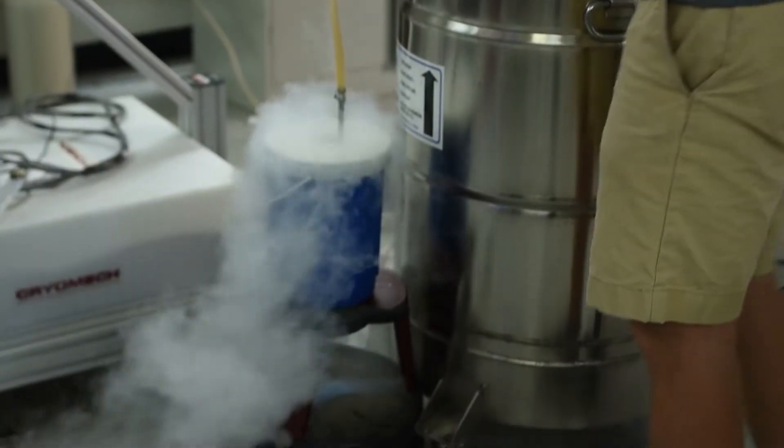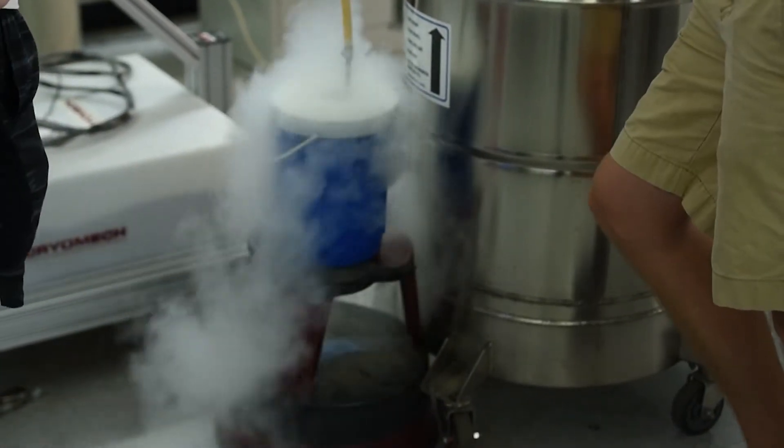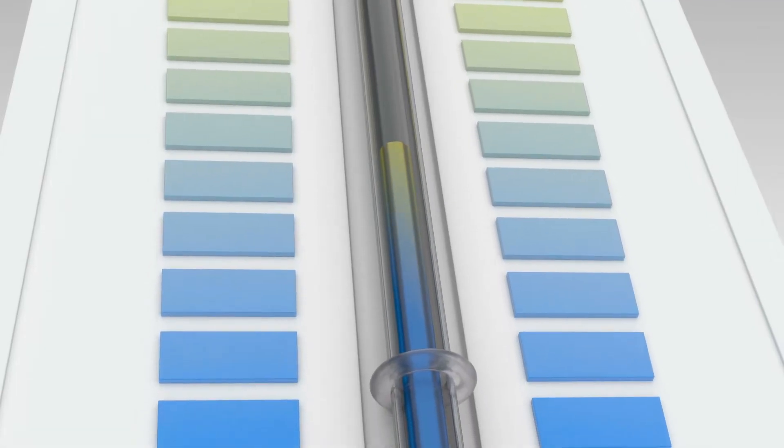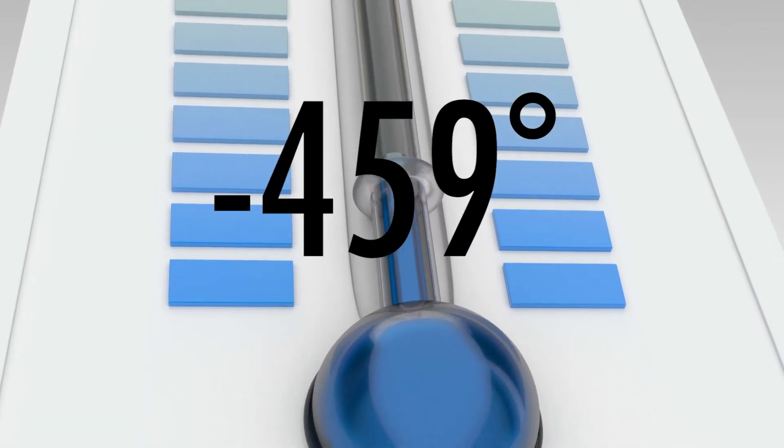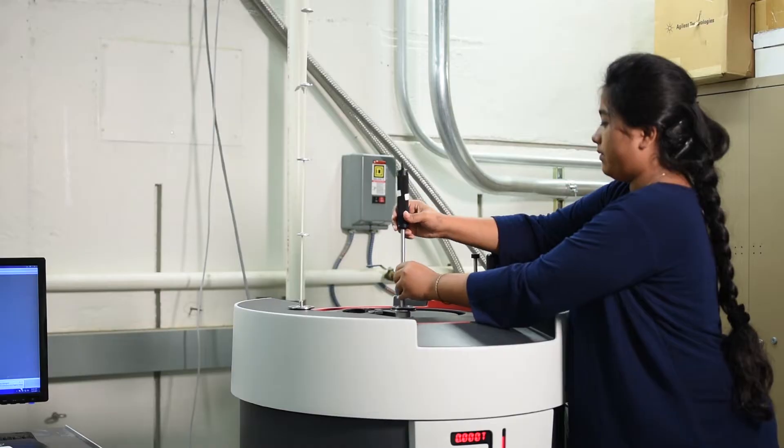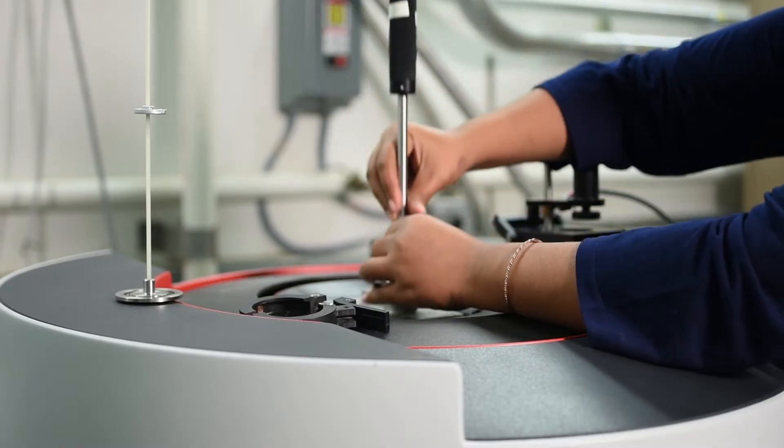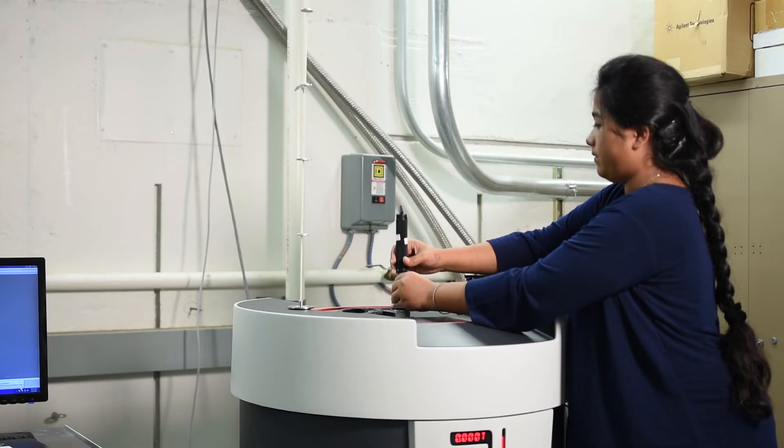But you need to use liquid helium if you're trying to get down to absolute zero, or minus 459 degrees Fahrenheit. That's why physicists want to find a high-temperature superconductor that will work at room temperature. It's just downright easier to work with.